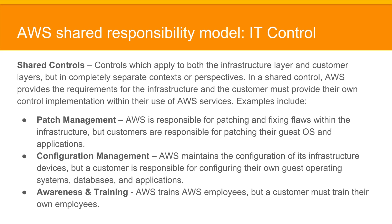The last type of control is the shared controls. These are controls which apply to both the infrastructure layer and the customer layer, but in completely separate contexts and perspectives. In a shared control, AWS provides the requirements for the infrastructure and the customer must provide their own control implementation within their use of AWS services. For example, patch management: AWS is responsible for patching and fixing flaws within the infrastructure, but customers are responsible for patching their guest operating systems and applications.